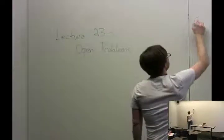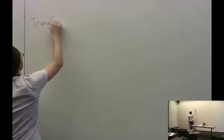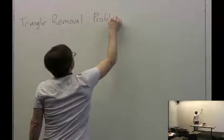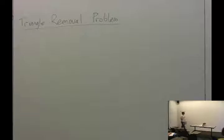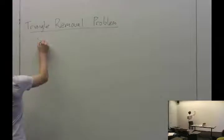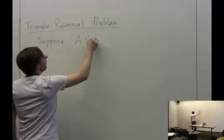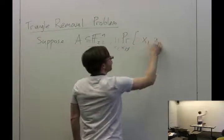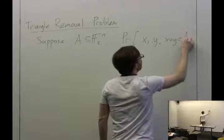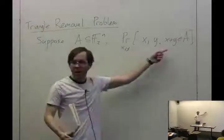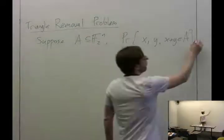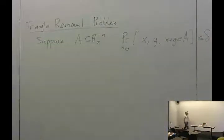It's called the triangle removal problem. You can think of it as a property testing problem. This was proposed in the context of Boolean functions by Green in 2005. Suppose you have some subset A of F2 to the N, and you do the following experiment: pick X and Y uniformly at random, and look at whether X, Y, and X plus Y are all in A. A triple X, Y, and X plus Y is called a triangle in this context.